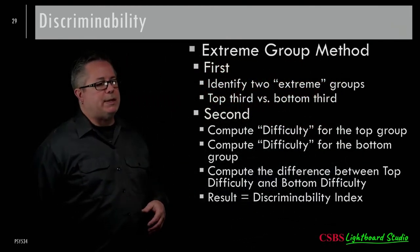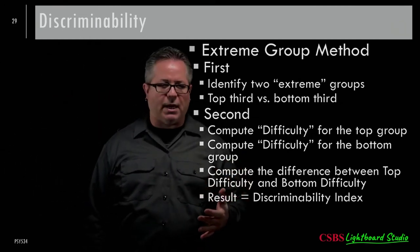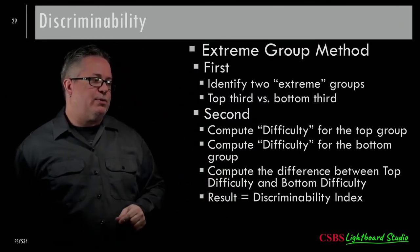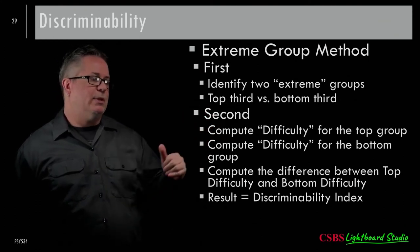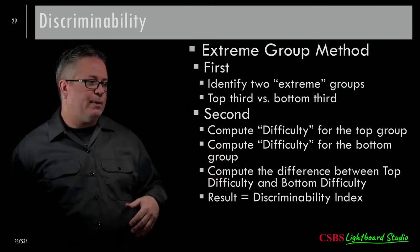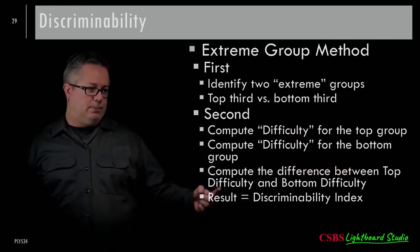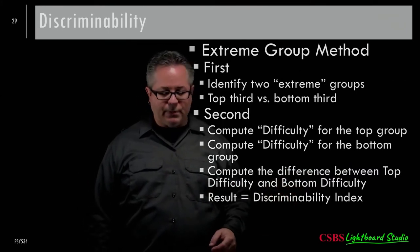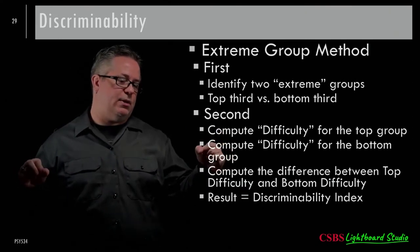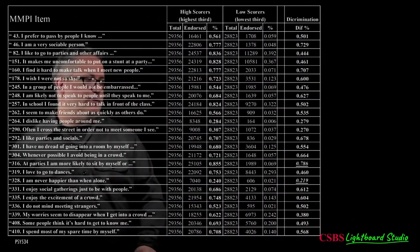Classical test theory is appealing because it's relatively simple — not a lot of math or black-box software. You identify two extreme groups, often by cutting the distribution into thirds and taking the top and bottom thirds. You compute the difficulty for each group and subtract — items with a larger difference between those difficulties are more discriminating; items closer together are less discriminating.